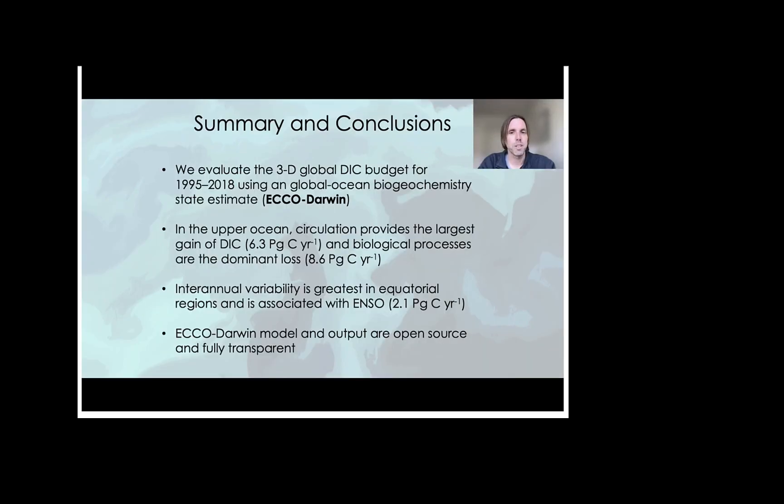In summary, we have computed and evaluated the three-dimensional global ocean DIC budget from 1995 to 2018 using the data-assimilative ECCO-Darwin Ocean Biogeochemistry State Estimate. Our results demonstrate that circulation provides the largest gain of DIC in the upper ocean, with biological processes resulting in the largest DIC loss. Globally, we find that interannual variability in the DIC pool is driven primarily by ENSO signals in the equatorial regions, with the largest change of 2.1 petagrams of carbon obtained during the 1997-1998 ENSO event. And finally, we stress that all ECCO-Darwin model code and output is open source and is available online.